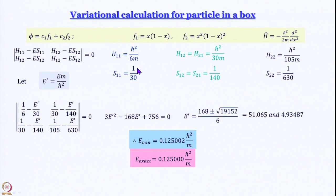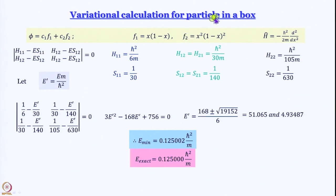We will express trial functions as linear combinations of orthonormal functions and revisit particle in a box with a twist. Let us quickly recap what we learned in the previous module about the variational calculation performed for the particle in a box.